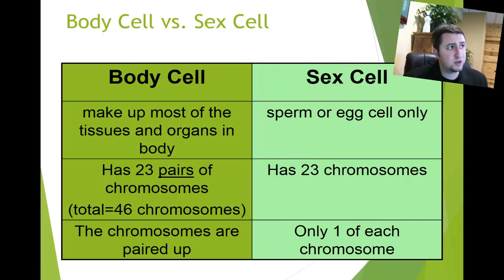First off, let's take a look at the difference between a body cell and a sex cell. A body cell is, in a human being, has 46 total chromosomes. And we get 23 pairs of chromosomes, so we actually have like two copies of each chromosome. And that makes up most of your body and most of your tissues. A sex cell is a little bit different. It actually only has 23 total chromosomes, so we only actually have one copy of each.